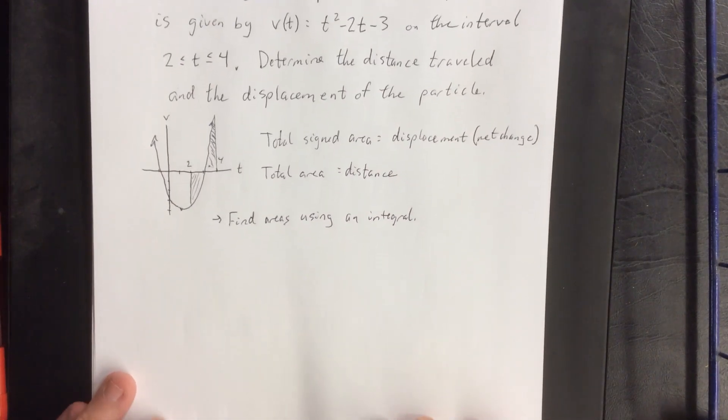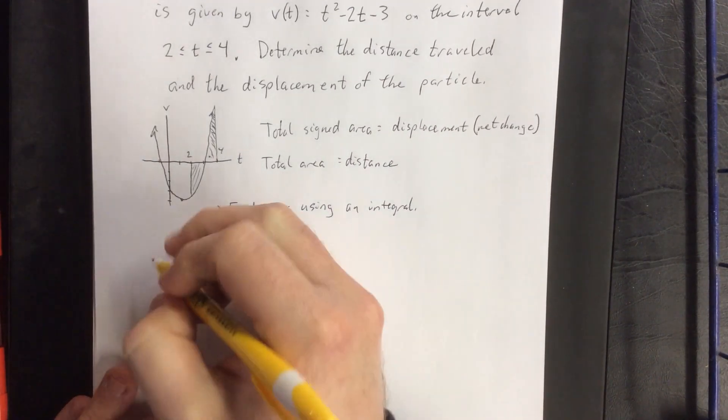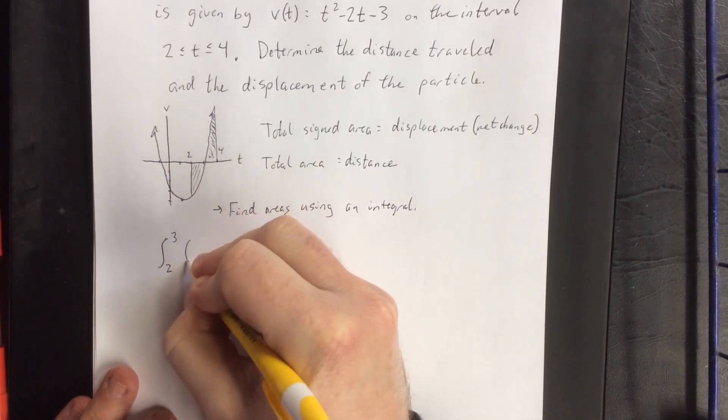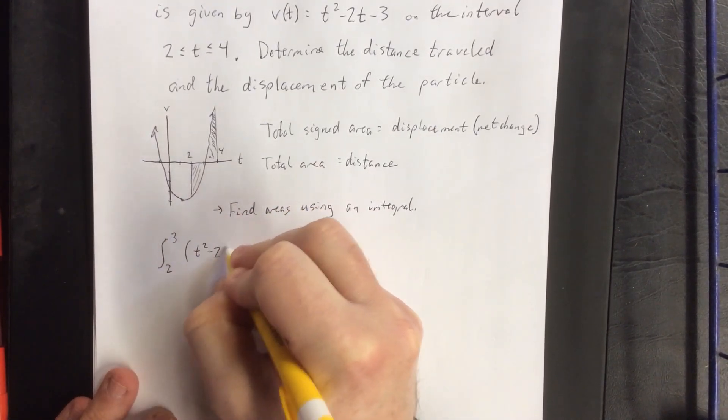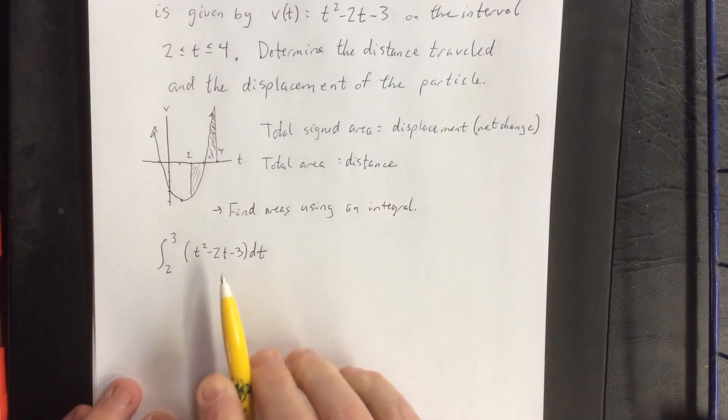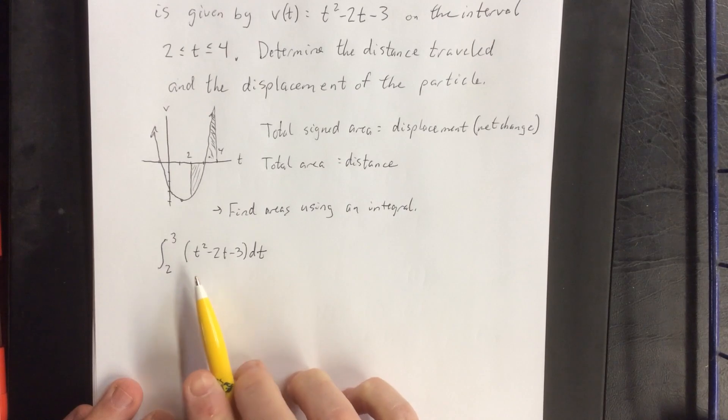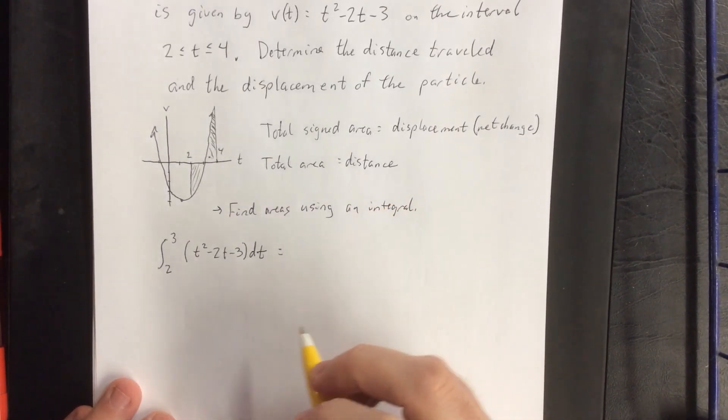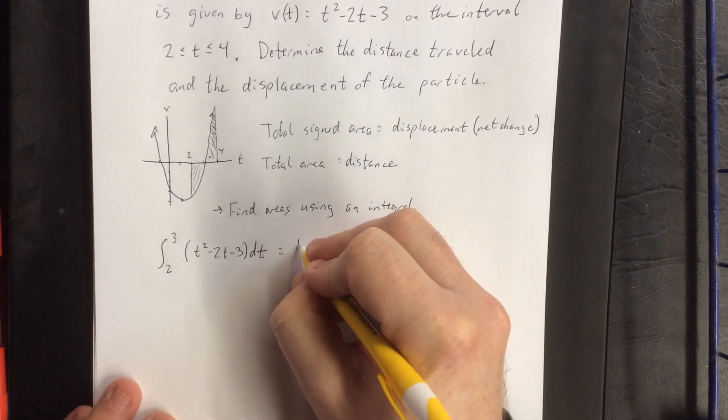First I'd like to figure out how much area we have on the negative side of things. So I'm going to set up my definite integral to go from 2 to 3 of the velocity function. I'm anticipating that my final answer here is going to be negative due to the fact that all of that area is below the t-axis. So according to the Fundamental Theorem of Calculus part 2, we find an antiderivative.